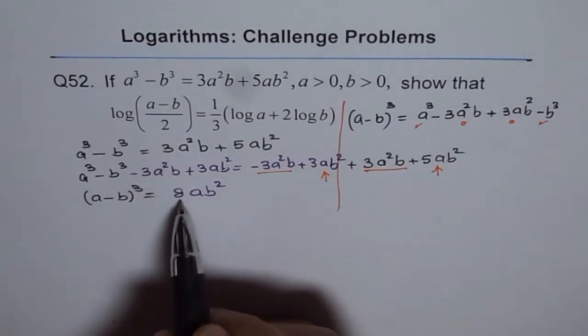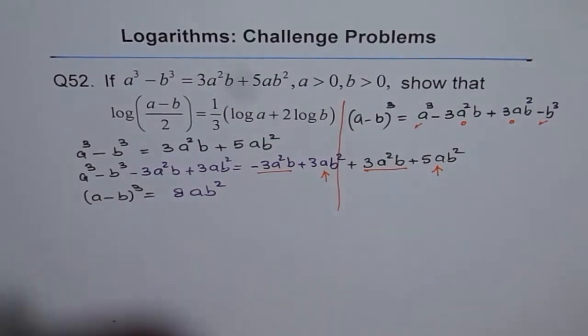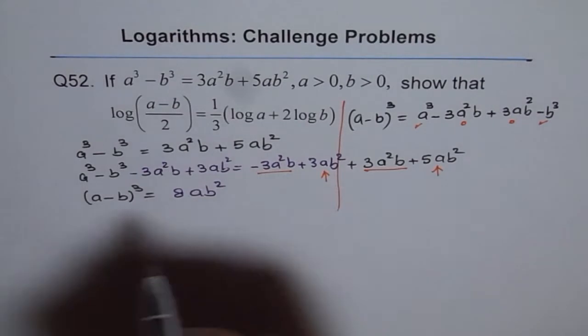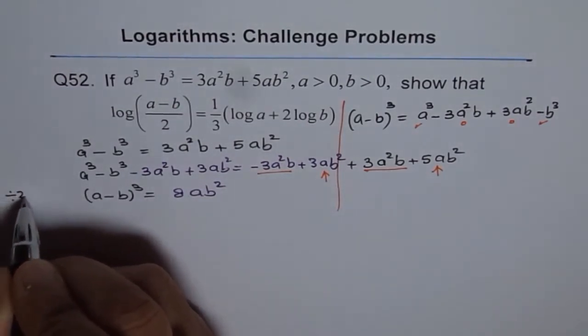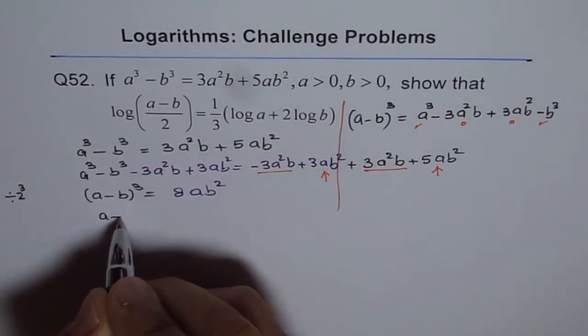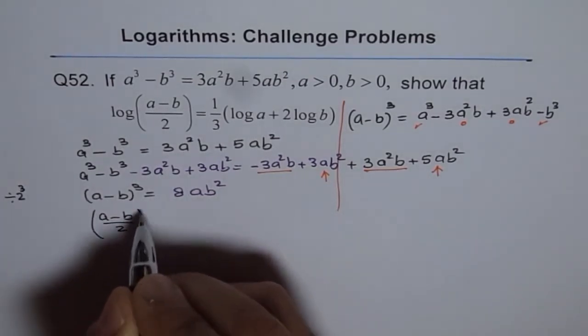Now, 2 you can get as 2 cubed of 8. So, I will bring 8 this side. That means I will divide both sides by 2 cubed. So, I am dividing by, let's divide by 2 cubed. 2 cubed is what? 8, right?